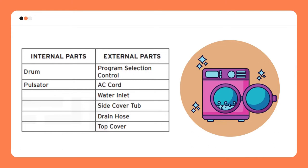The washing machine has internal and external parts. The internal parts are the drum and pulsator, while the external parts are the program selection control, AC cord, water inlet, side cover, tub, drain hose, and the top cover.